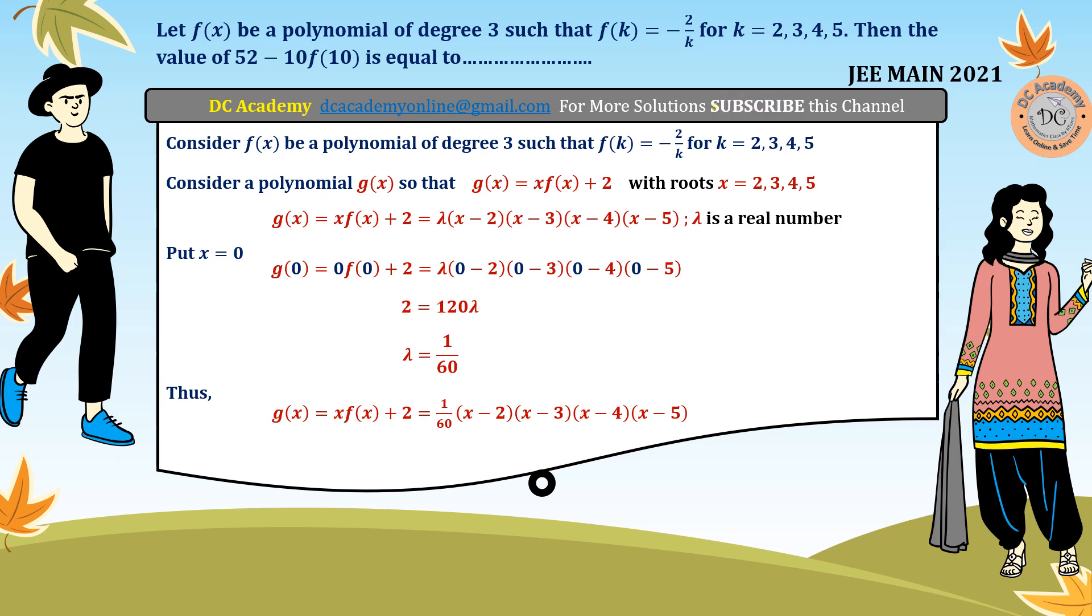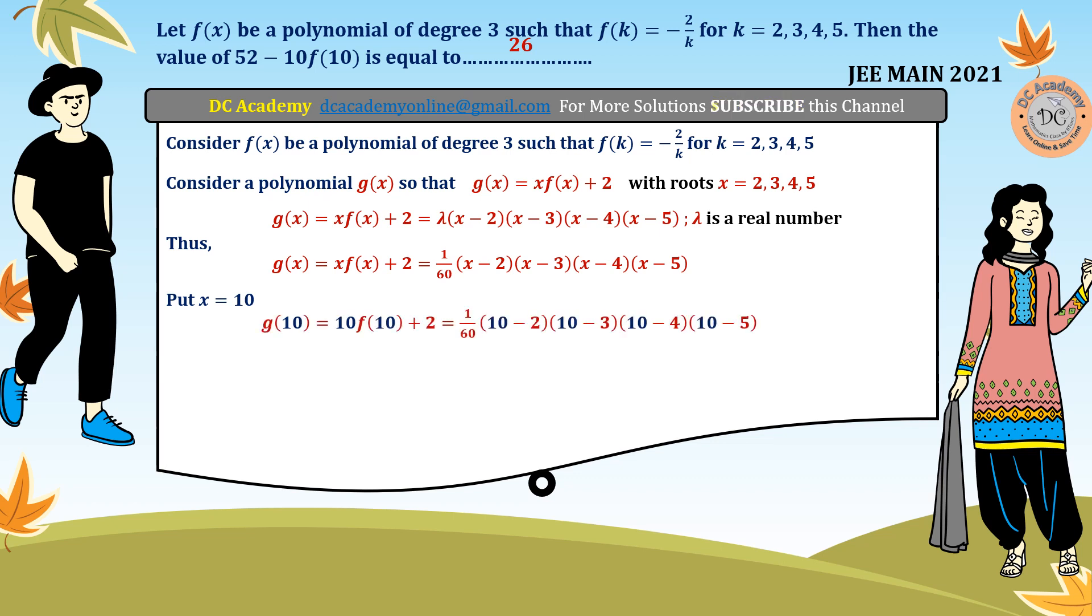Now as g(x) is obtained, we can find out that if we substitute some suitable values of x, we can find that f value as well. As we need to find out the f(10) value, so we put x is equal to 10. So if we put x is equal to 10, we obtain that g(10) is equal to 10f(10) plus 2 is equal to whatever we get when we replace x by 10.